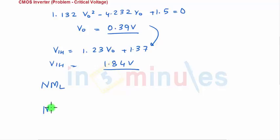The lower noise margin is given by VIL minus VOL. We have already seen this and the higher noise margin is given by VOH minus VIH.